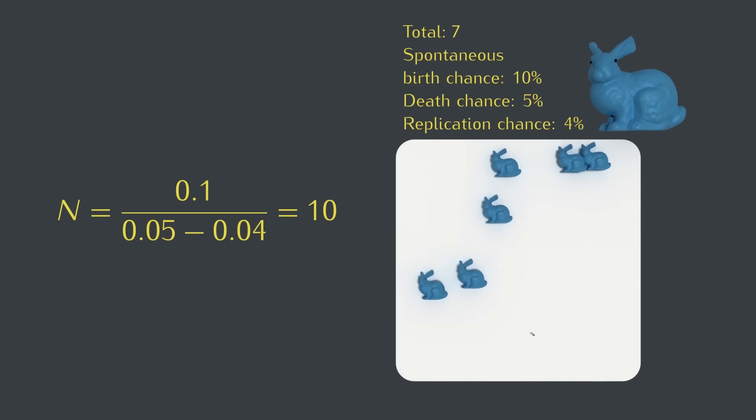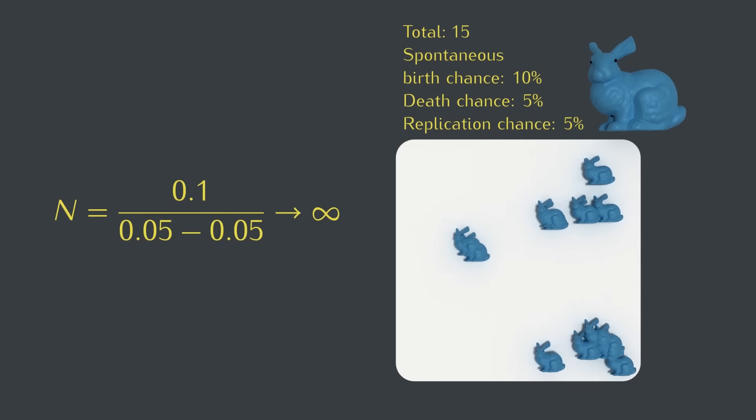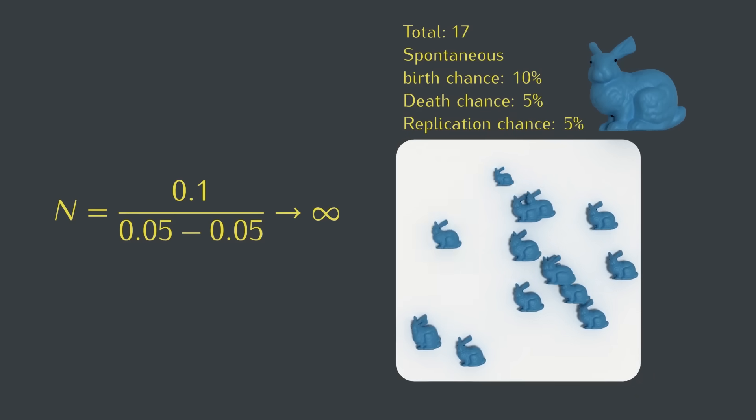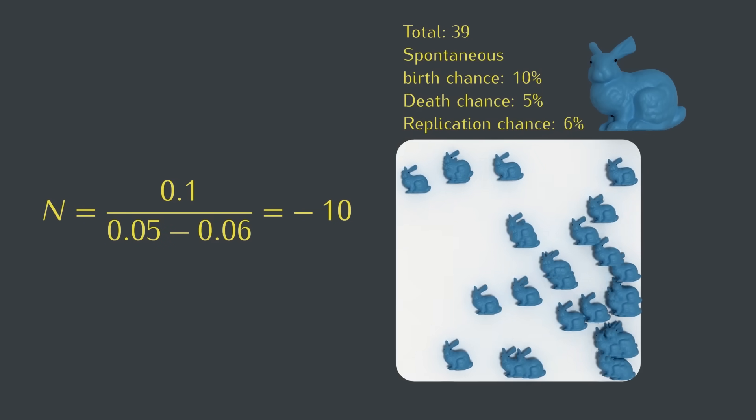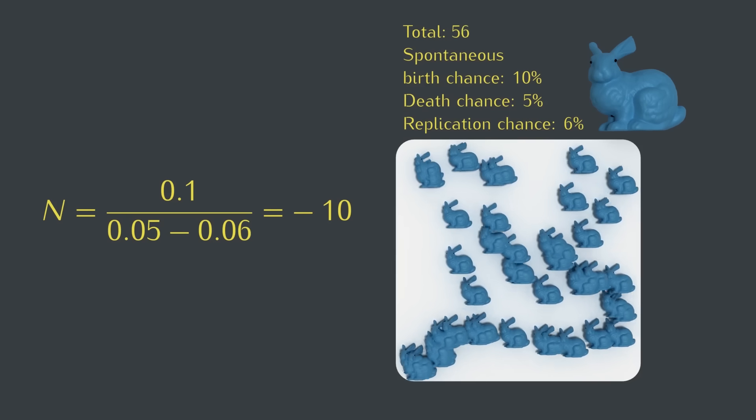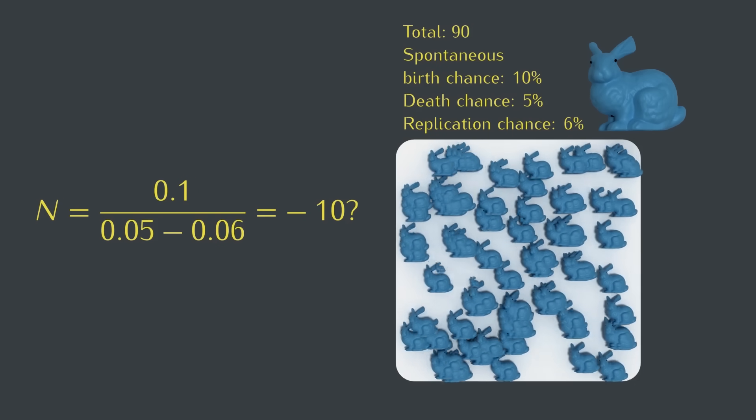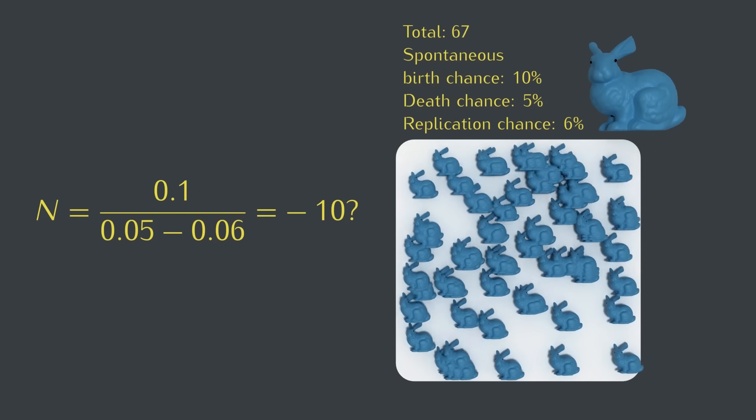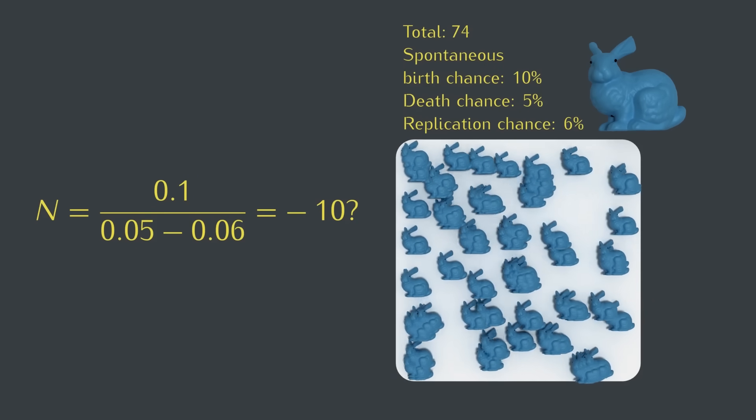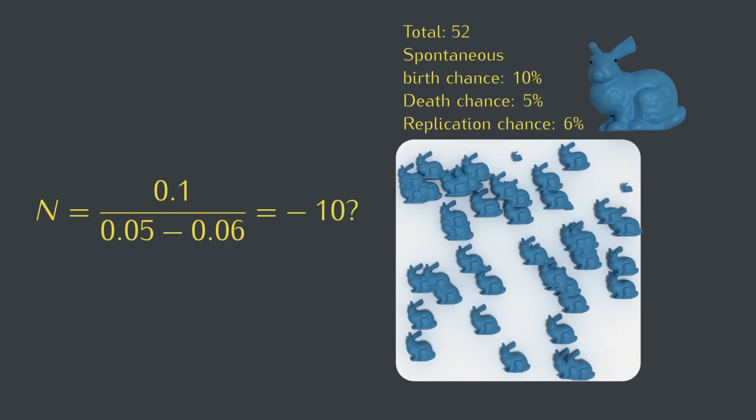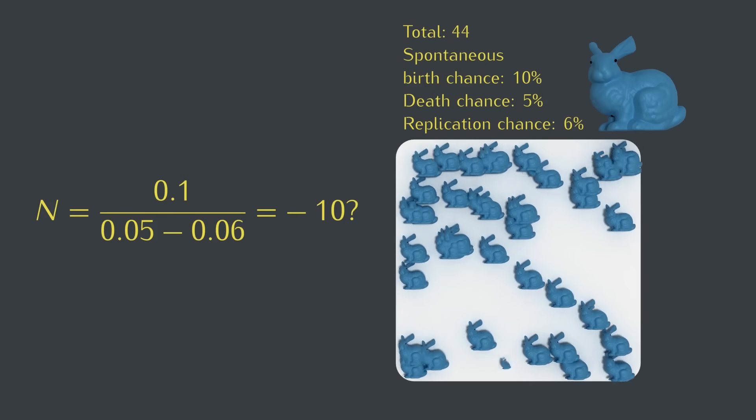And you might notice that we're about to run into an issue. If we raise the replication chance to 5%, we'll be dividing by 0, and there won't be an equilibrium at all anymore. The population will get bigger and bigger without limit, and if the replication chance goes higher than the death chance, our formula gives us a negative number for n, which makes no sense because we can't have a negative number of creatures. And even if we could, the number of creatures is clearly going up and up and up and not getting closer to that negative number. Reproduction quite literally breaks our equation.